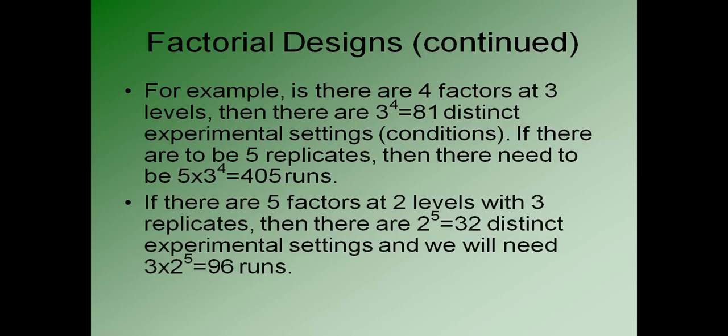As another example, if there are five factors each at two levels with three distinct replicates, then there are going to be 2 to the 5th, which is 32 distinct experimental settings, each of which will have to occur three times, one for each replicate, so the total number of runs that we need is going to be 3 times 2 to the 5th, or 96 runs.